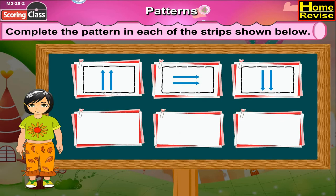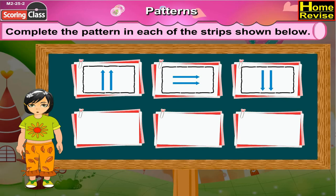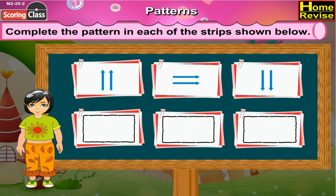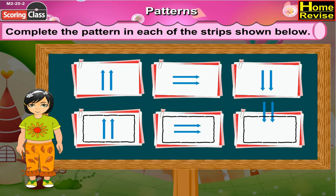Now the next pattern strip. Can you notice the first three boxes? There are upward arrows, then in the next box there is a sideways arrow, and in the third box there are downward arrows. Now the next three boxes are empty. So in the first box we will draw the upward arrows, in the second box sideways arrows, and in the third box downward arrows.